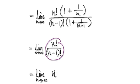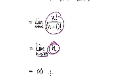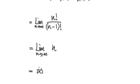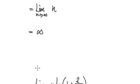Simplifying gives you just n. So as n tends to infinity, this heads towards infinity. So the limit will be infinity — the sequence doesn't converge.